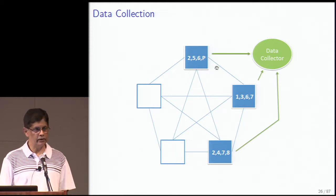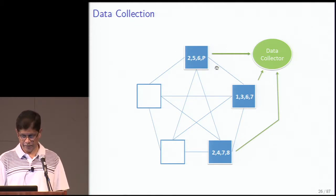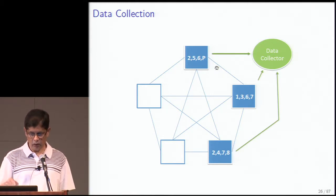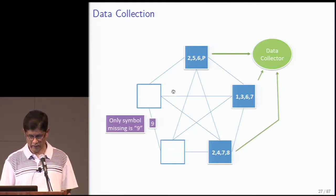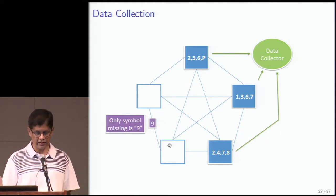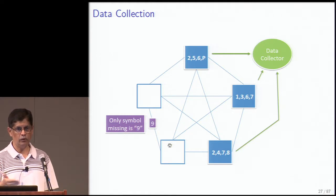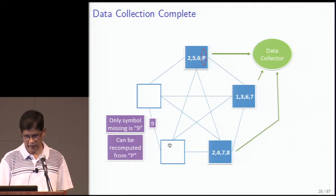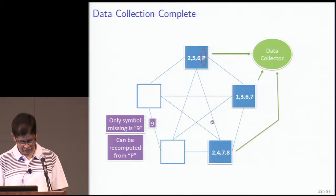For data collection, you connect to any three nodes and recover all the data. Since any two nodes share an edge, the only symbol you don't have access to is the one on the edge connecting the two nodes you didn't contact. You have access to nine out of ten symbols, and since you encoded with a single parity MDS code, nine symbols are enough to recover all the data. So parity helps you recover the missing symbol, and data collection is also very simply accomplished.